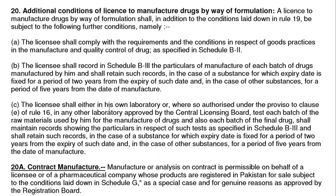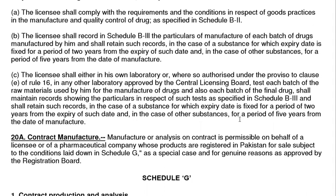In the case of other substances, the record shall be retained for a manufacturing period of five years from the date of manufacture. The licensee shall, in his own lab or in any lab approved by the Central Assessing Board under Rule 16, test each batch of raw material used in manufacturing. Each batch of the final drug shall be tested and a record maintained showing particulars in respect of such tests as specified in Schedule B, retained for two years from expiry date or five years from date of manufacture.